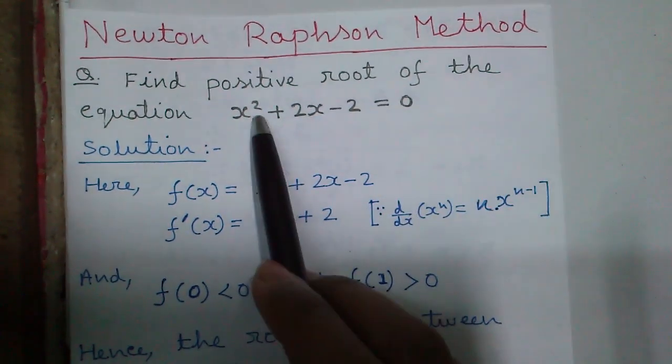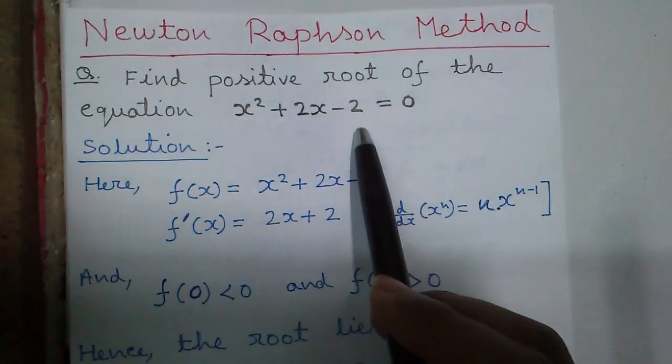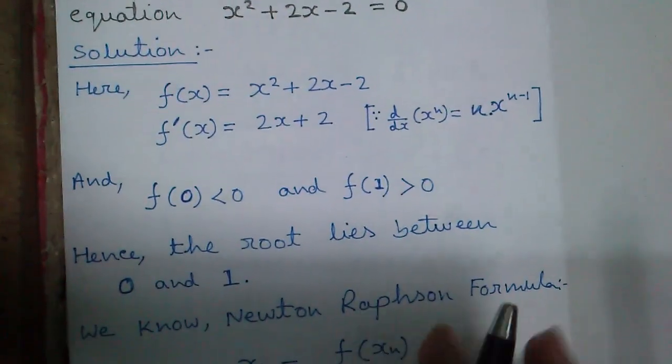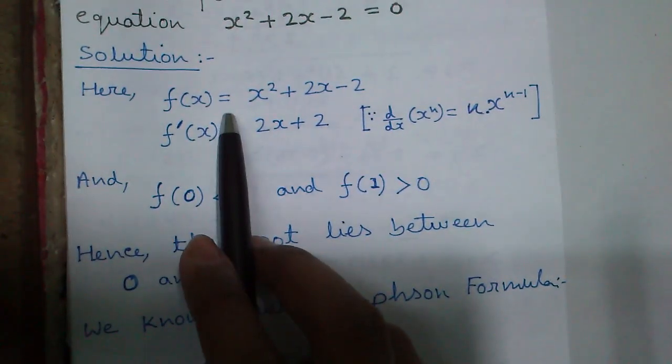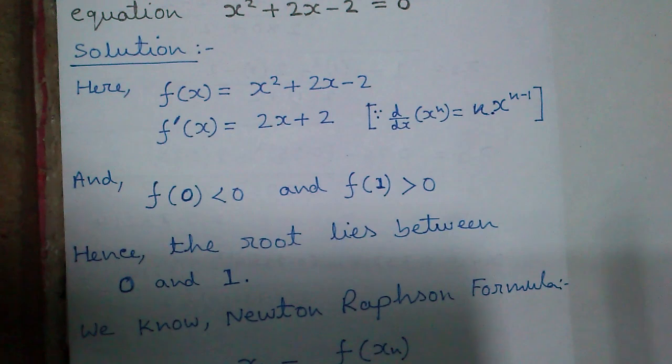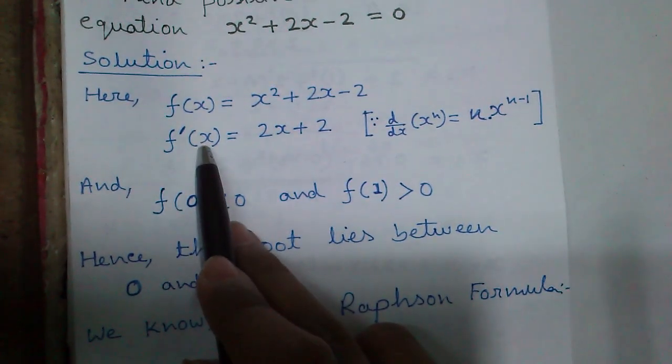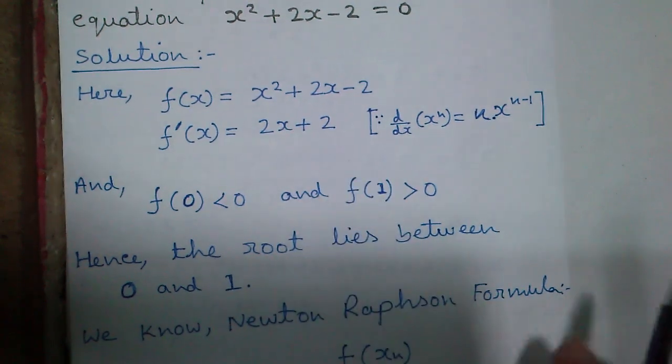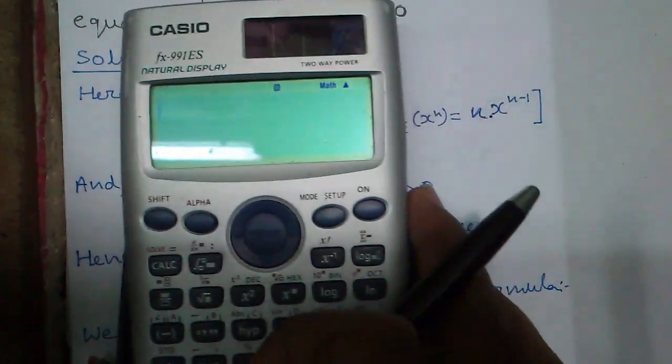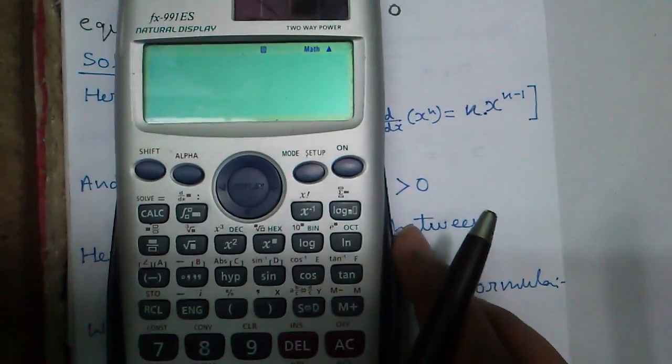Find the positive root of the equation x square plus 2x minus 2 equals 0. Here f(x) equals x square plus 2x minus 2 and f'(x) equals 2x plus 2. Now you have to find out the range between which the root lies.